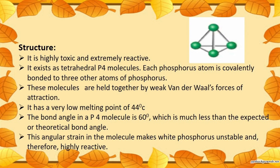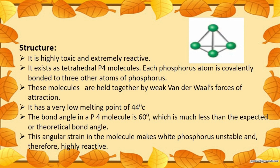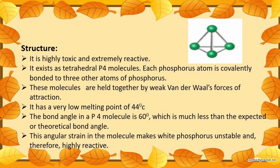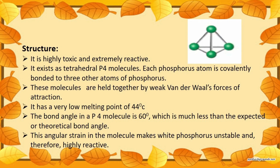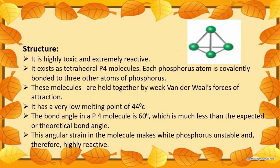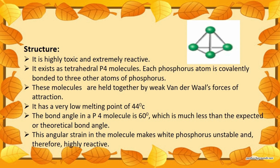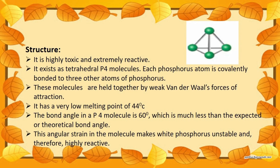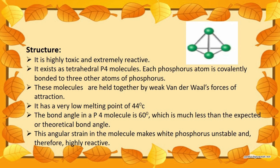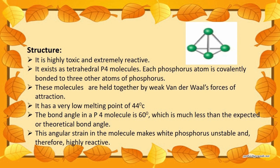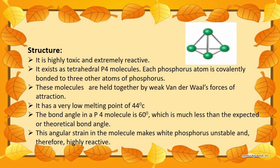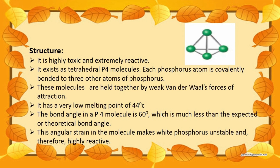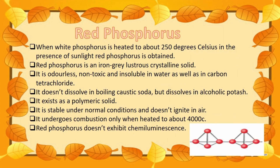White phosphorus is extremely reactive because it exists as tetrahedral P4 molecules, where each phosphorus atom is covalently bonded to three other phosphorus atoms. These molecules are held together by weak van der Waals forces of attraction, giving it a very low melting point of 44 degrees Celsius. The bond angle in a P4 molecule is 60 degrees, much less than expected, and this angular strain makes white phosphorus unstable and highly reactive.